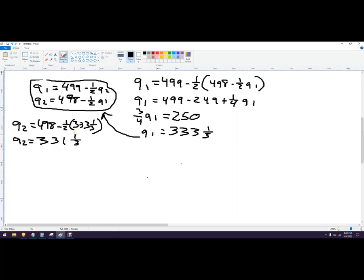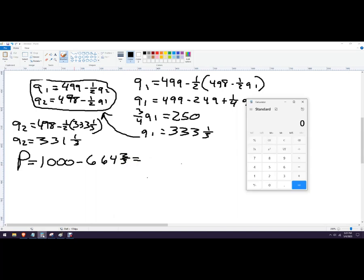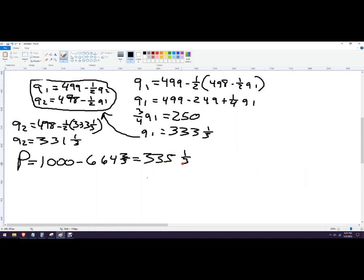So these are the two quantities that, so this one and this one. And we're going to add those back into our original demand function, which was price is 1,000, because we're trying to solve for price now. Now, this will be 664 and two-thirds. And so the price in this market is somewhere around 300 something. So 1,000 minus 664 is 335 and one third. So this is the price. This is the quantity for firm one. This is the quantity for firm two.